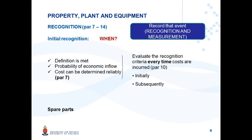To quickly summarize: we looked at recognition and specifically initial recognition. We examined costs incurred surrounding spare parts. Paragraph 8 indicated that any costs incurred, initially or subsequently, need to be evaluated against the recognition criteria before they can be capitalized against Property Plant and Equipment.